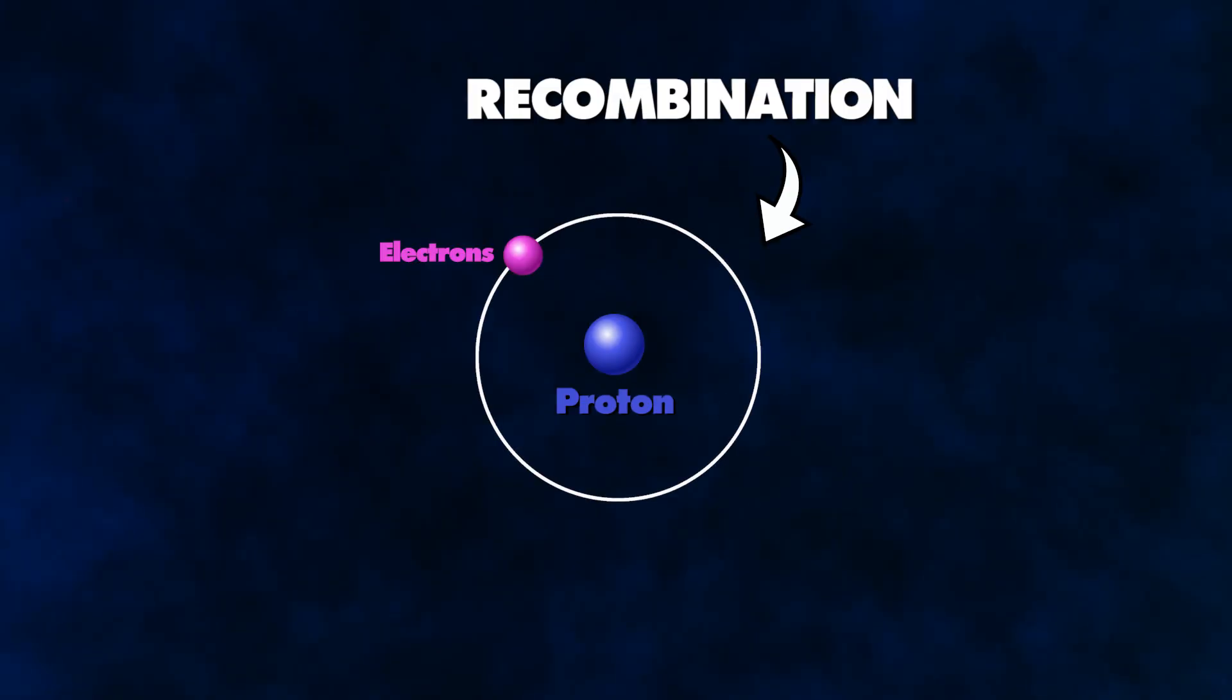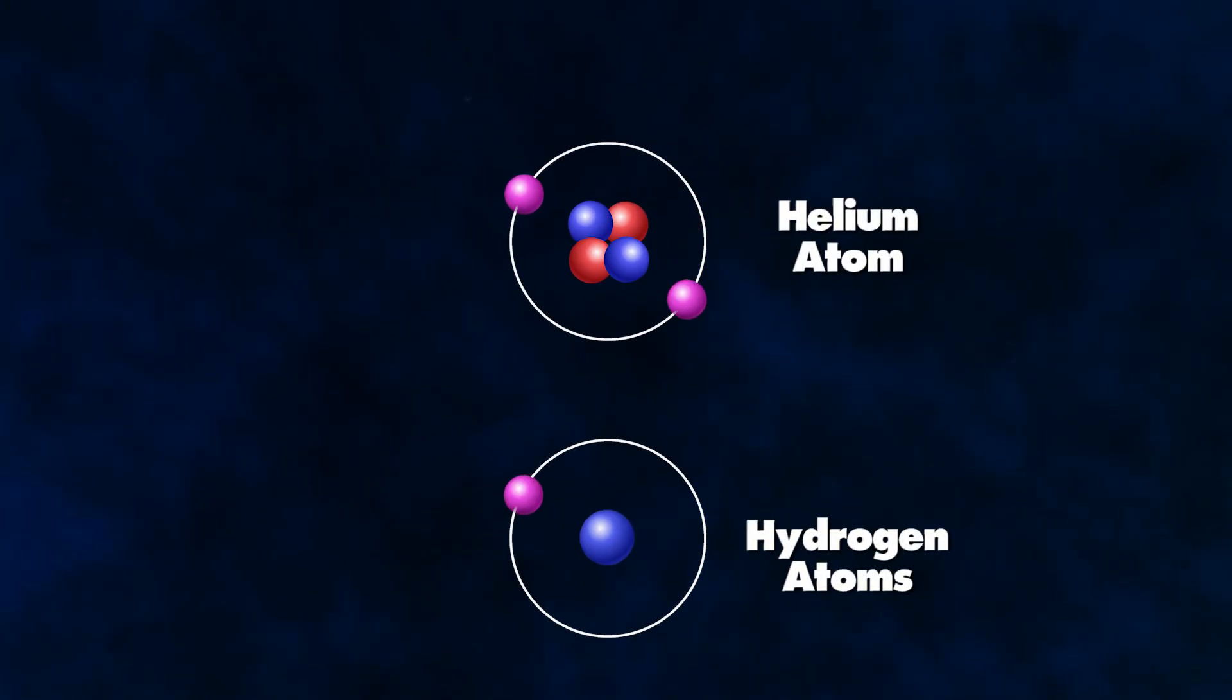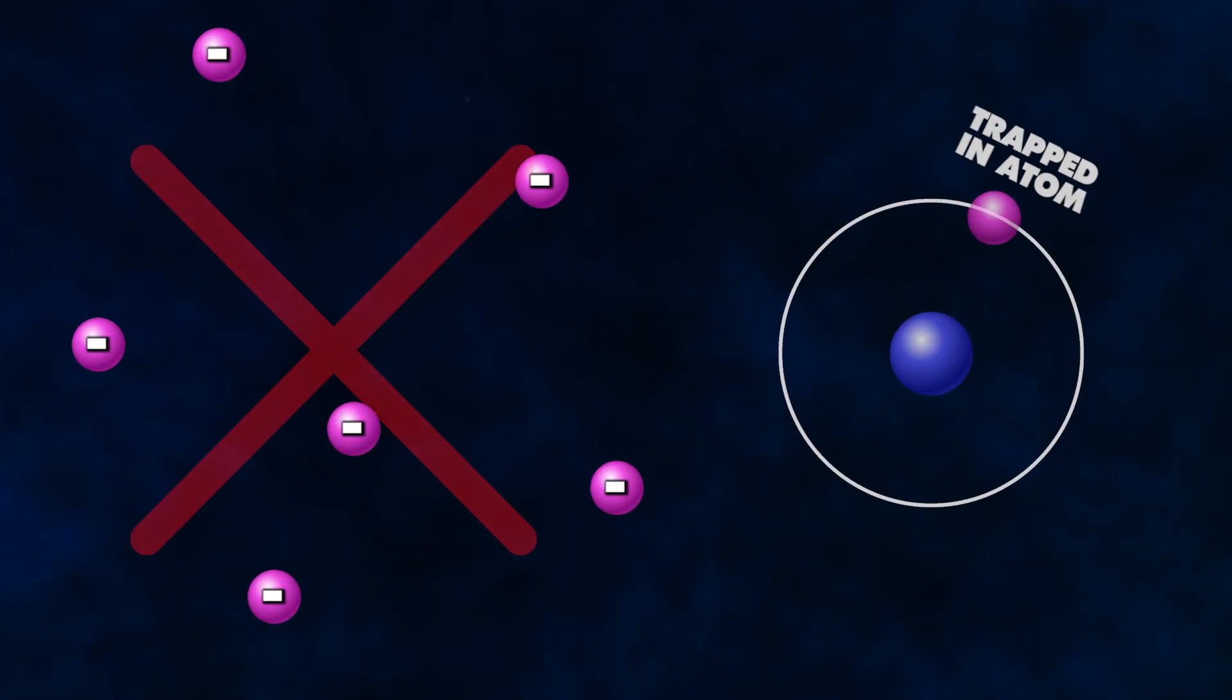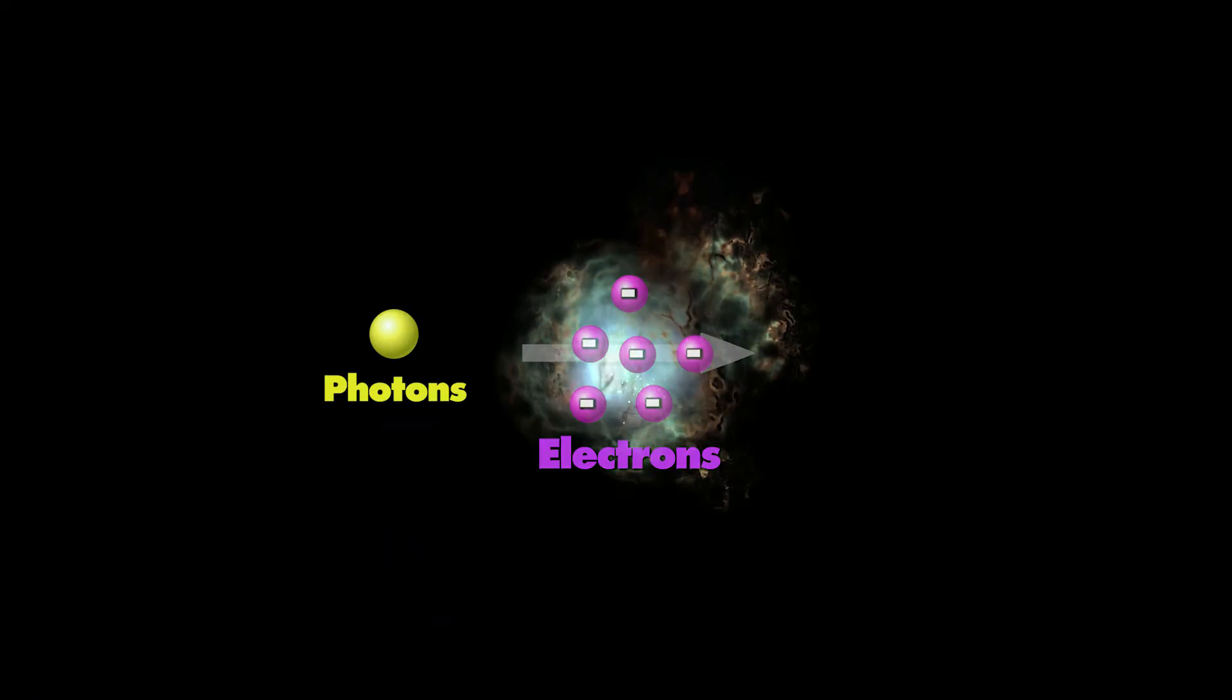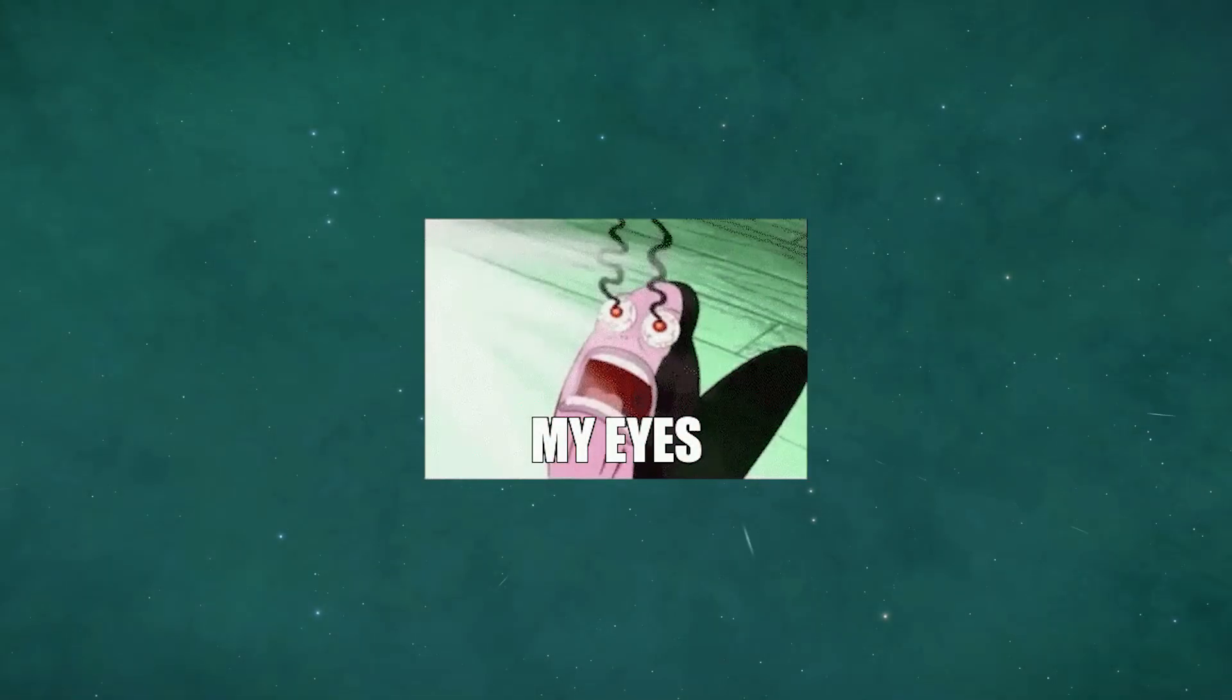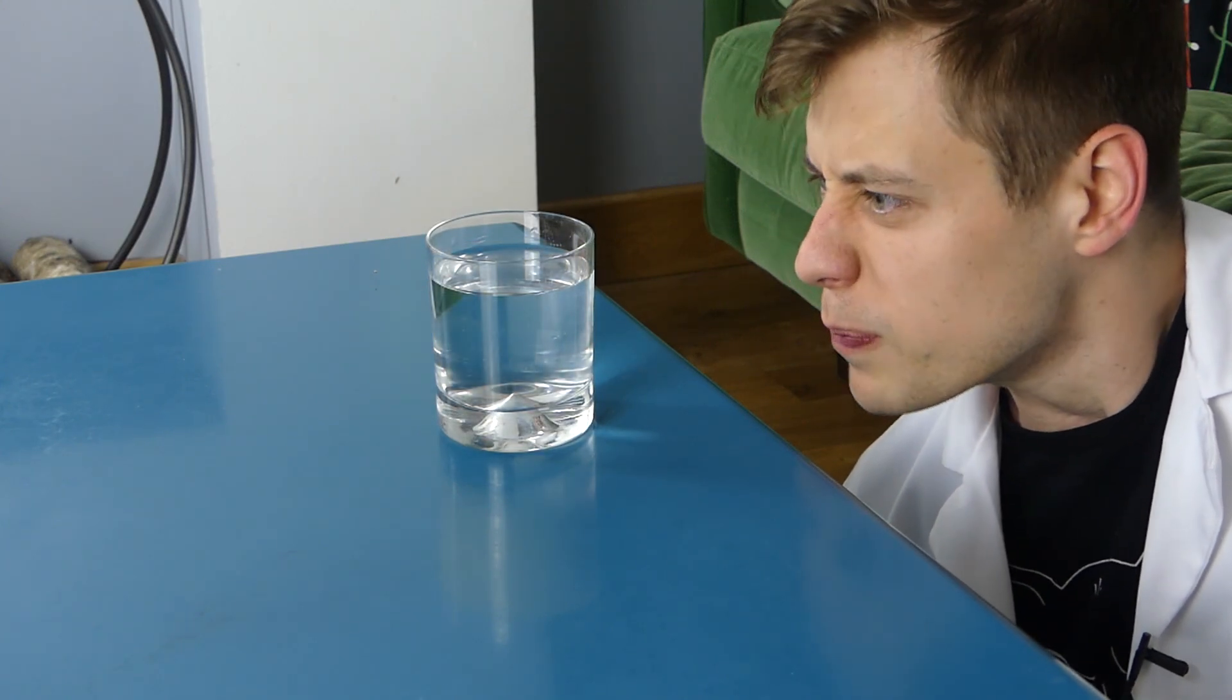When recombination finally happened though, many of the free electrons in the universe were effectively captured and locked up as atoms. This means these electrons were no longer floating about free. So it could no longer scatter photons. Finally, light could now travel freely through the universe unhindered. The universe had become transparent. I can see! It's a miracle! I'm some kind of soup Jesus!